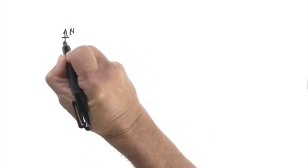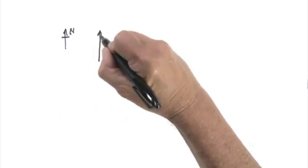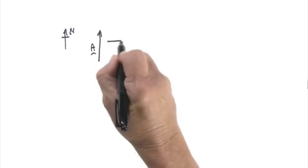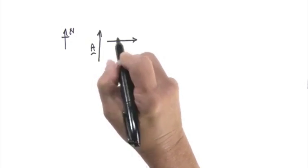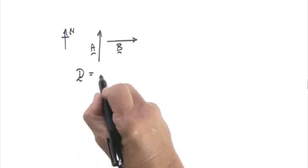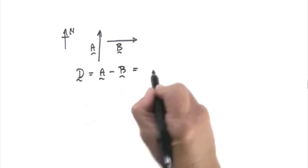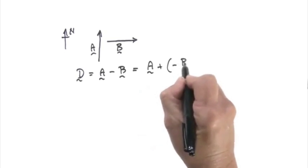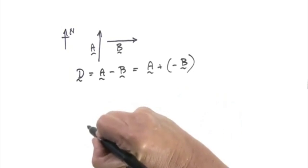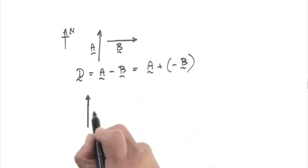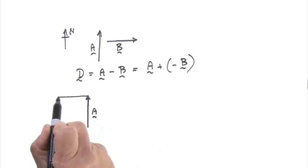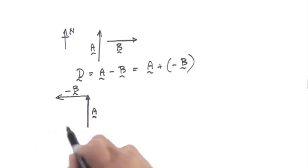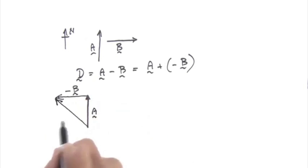Well, what about A minus B? How do we subtract vectors? There are two ways. We could say A minus B equals A plus minus B. B is five meters east, so minus B is five meters west. So here's a diagram of A plus minus B. That's one easy way to subtract vectors.